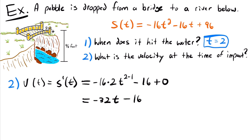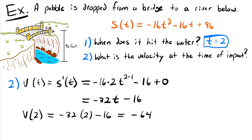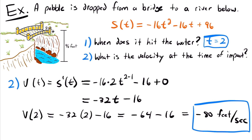Plugging in time equals 2 into the velocity function: velocity at t equals 2 is negative 32 times 2 minus 16, which equals negative 64 minus 16, equal to negative 80 feet per second. That is the instantaneous velocity at the moment of impact. Finding instantaneous velocity using the derivative really isn't too difficult. That's all for this lesson — feel free to leave questions in the comments, and I'll have more examples linked in the description.